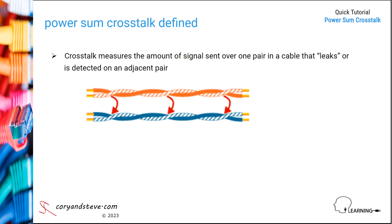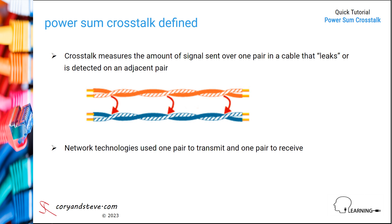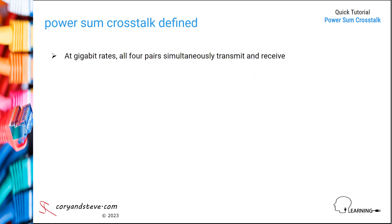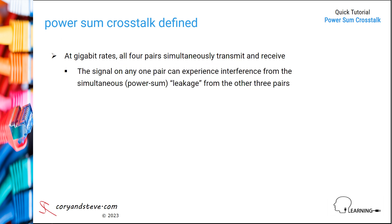In earlier days, network technologies such as 10 megabit Ethernet and 100 megabit Ethernet used only two pairs for signaling — one to transmit and one to receive — so crosstalk was measured on a pair-to-pair basis. At gigabit rates, however, all four pairs simultaneously transmit and receive. Therefore, the signal on any one pair can experience interference from the simultaneous, or PowerSum, leakage from the three other pairs.